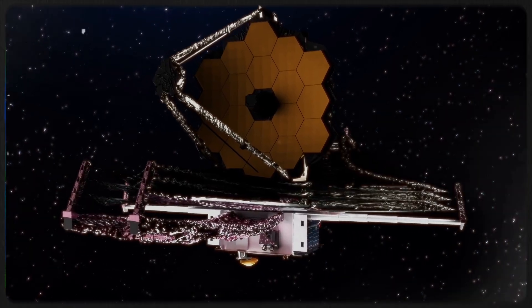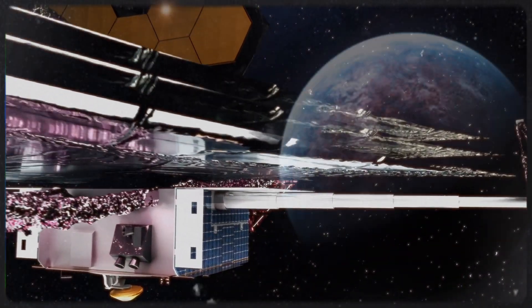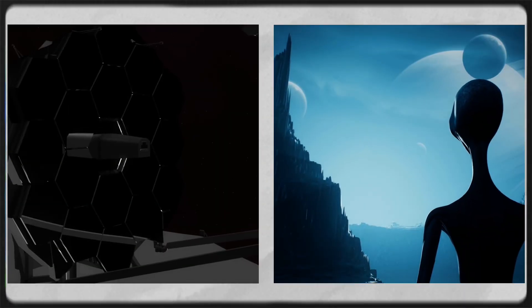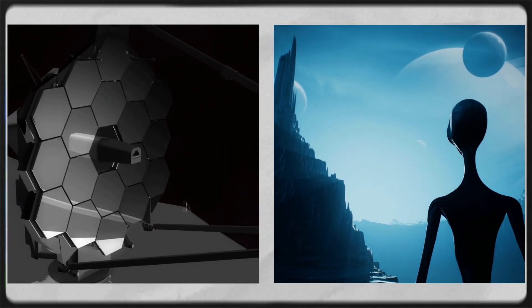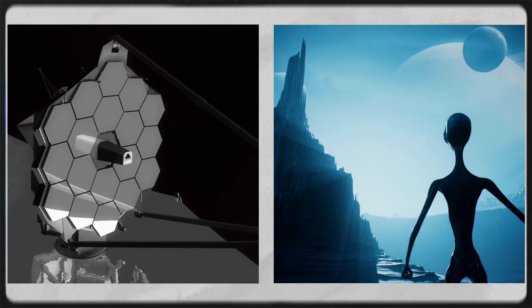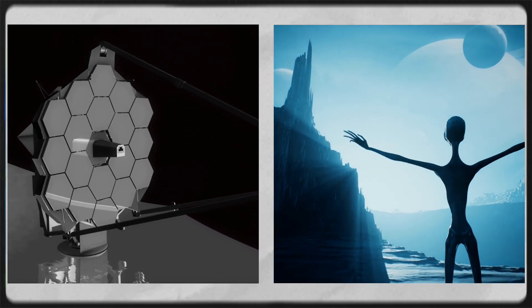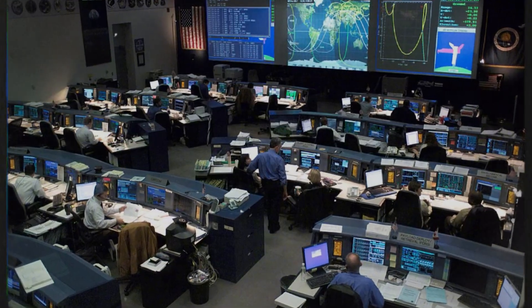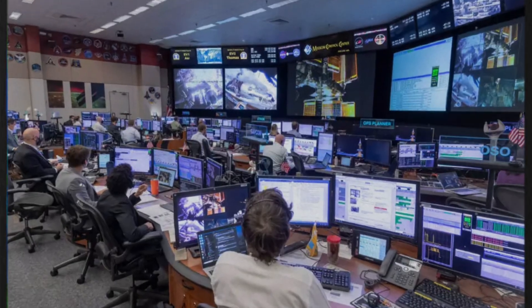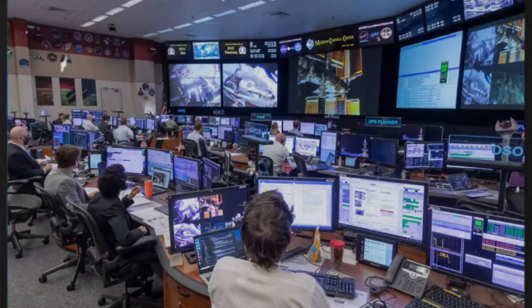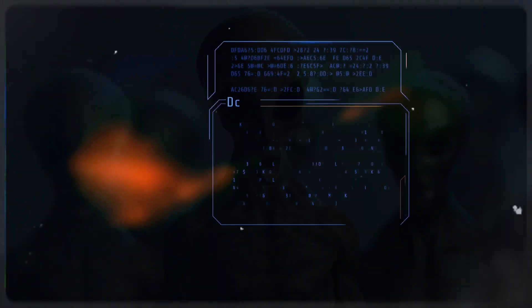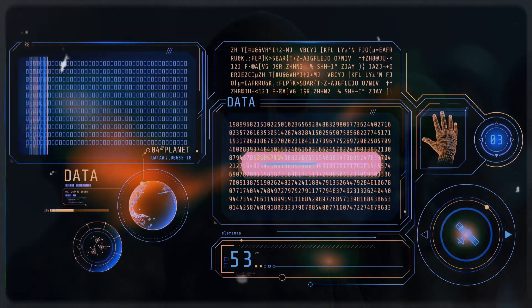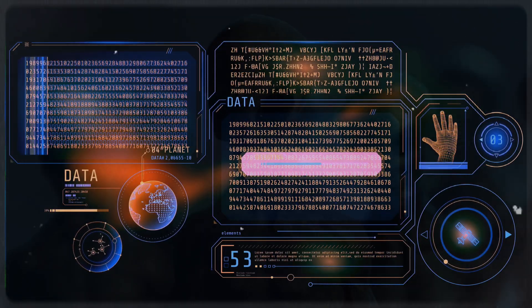This massive telescope found something interesting on the distant exoplanet Proxima Centauri B as it surveyed the cosmos. It may have discovered an extraterrestrial metropolis on this faraway planet after spotting lights that resemble those found in earthly cities. Among scientists, this hypothesis has generated a great deal of enthusiasm and interest. Their curiosity is piqued since this could be the kind of breakthrough they have been seeking.